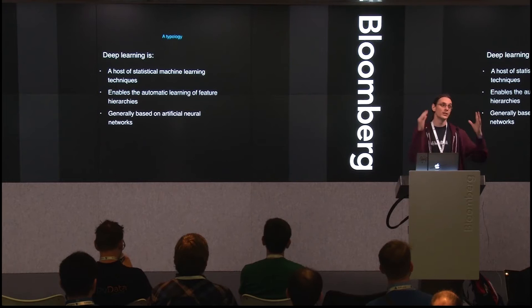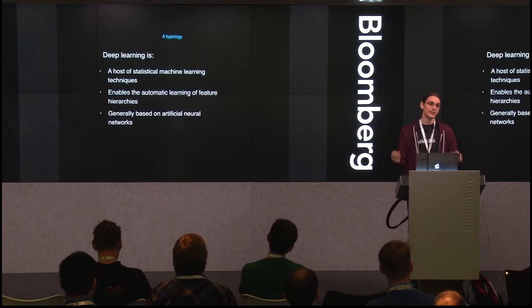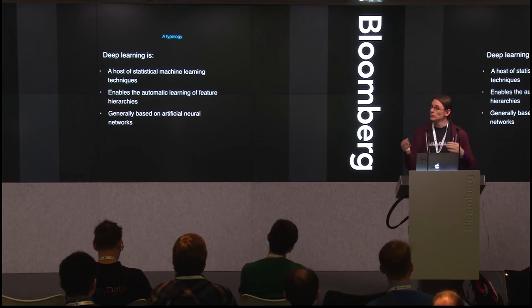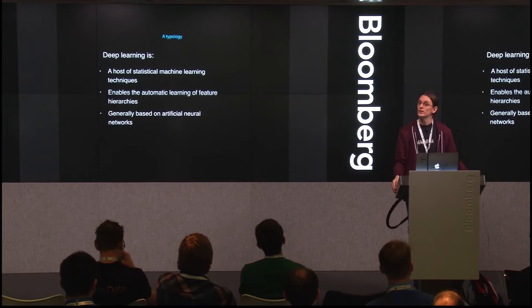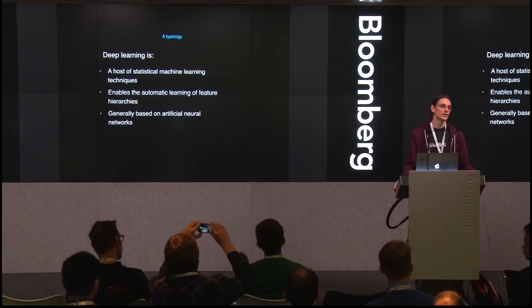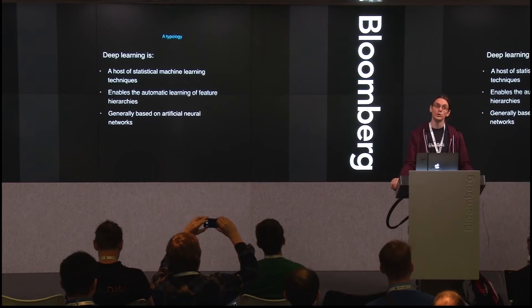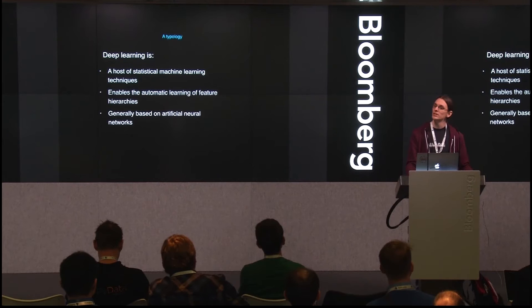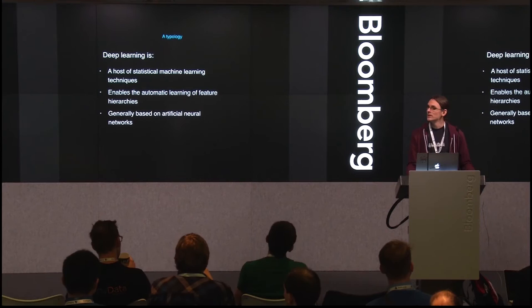Deep learning basically means neural networks — stacking multiple levels of neural networks together. This has mostly taken off since 2006, when two papers came out solving the mystery of going beyond three layers. Previously, going further than three layers wasn't really feasible, making neural networks comparable to SVMs. SVMs were state of the art and much better performers, but some researchers kept working on neural networks. Around 2006, it was found that GPUs could accelerate these computations, and more labeled data became available — when these two things collided, deep learning took off.